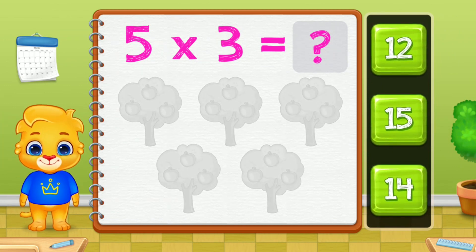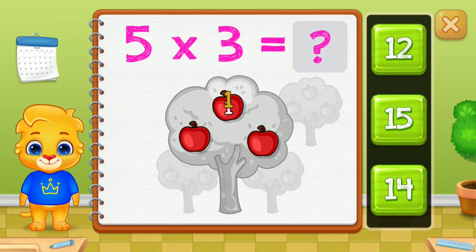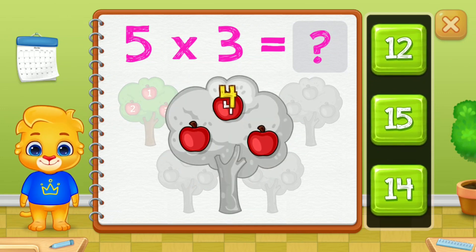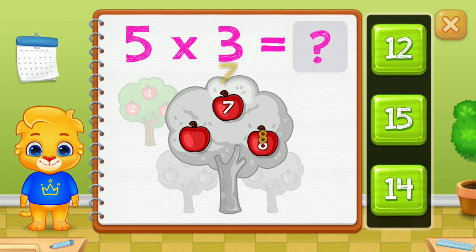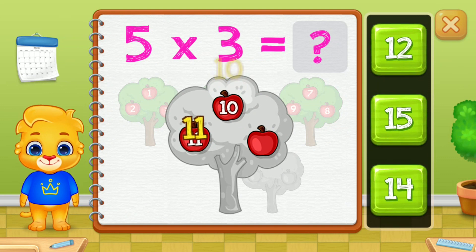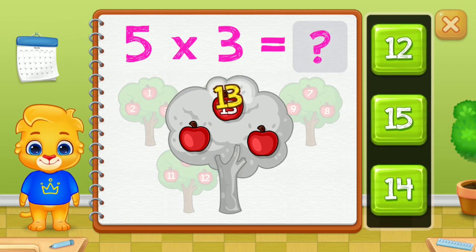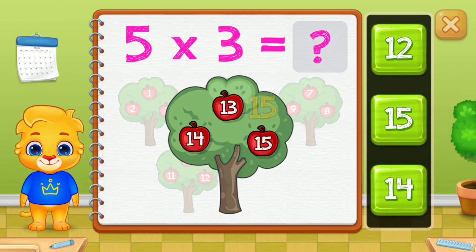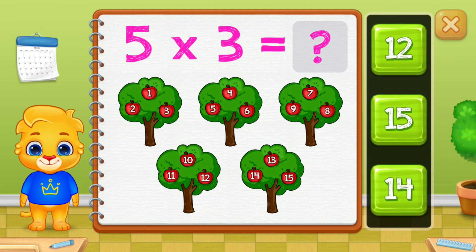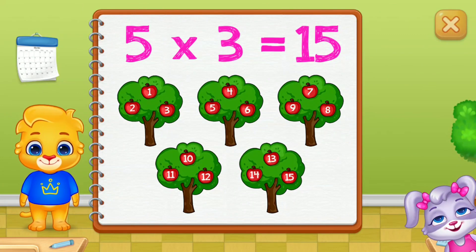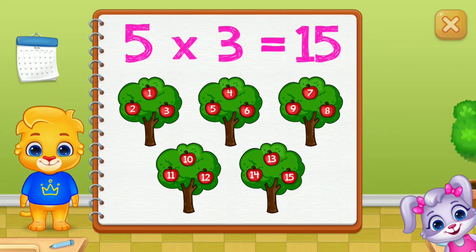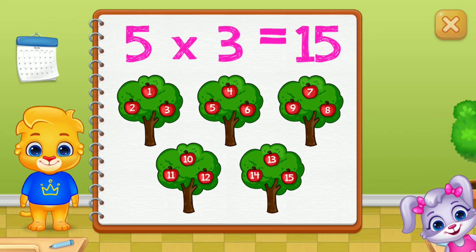Let's learn to multiply using groups. 1, 2, 3, 4, 5, 6, 7, 8, 9, 10, 11, 12, 13, 14, 15. When you multiply, you are adding numbers in groups. 5 groups of 3 equals 15.